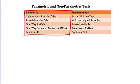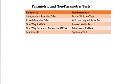A parametric test makes an assumption about the population parameters and the distributions that the data came from. Parametric tests include Student's t-tests and ANOVA, which assume the data comes from a normal distribution. The opposite is a non-parametric test, like the Mann-Whitney or Kruskal-Wallis, which tend to make fewer assumptions about those population parameters.